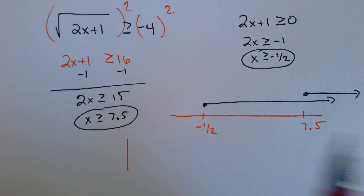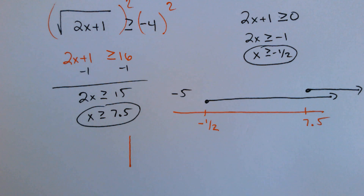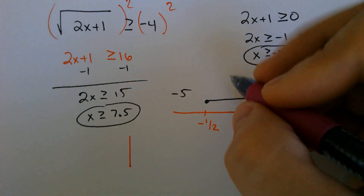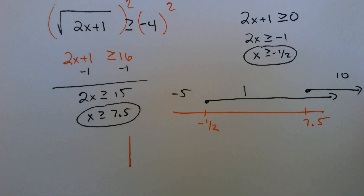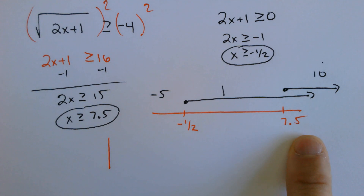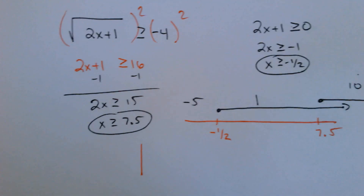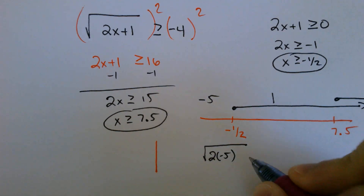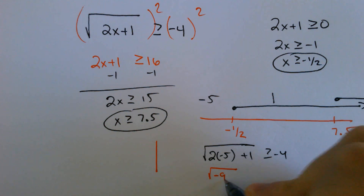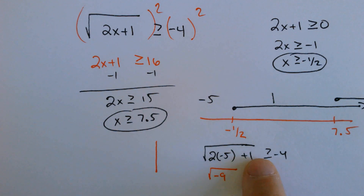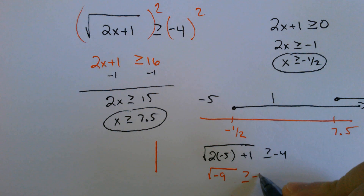Let's plug in a number smaller than negative 1.5 — I would go with negative 5. In between negative 1.5 and 7.5, let's go with 1. And then bigger than 7.5, we got 10 — that's the one we expect to work. Let's try them out. The square root of 2 times negative 5 plus 1: is that greater than or equal to negative 4? We would end up with another imaginary answer, because 2 times negative 5 is negative 10, plus 1 is negative 9. Negative 9 does not square root. So this does not work. Negative 5 is out.